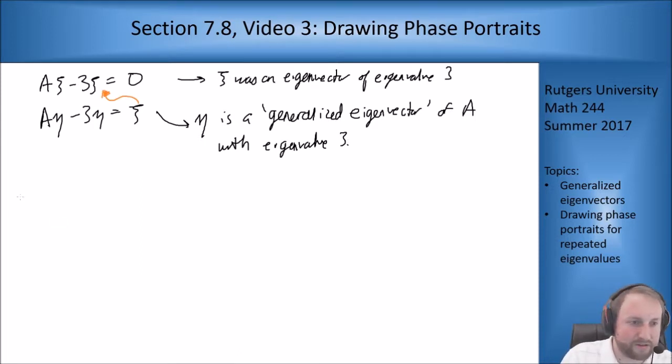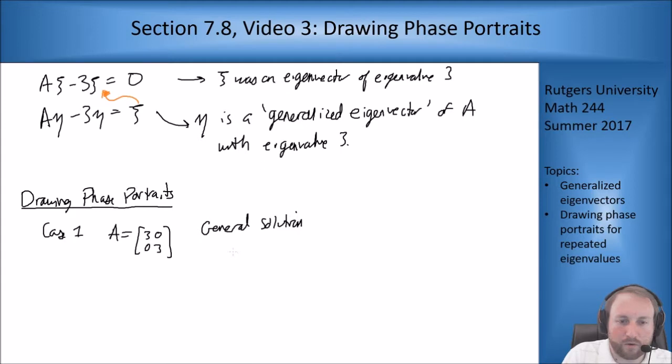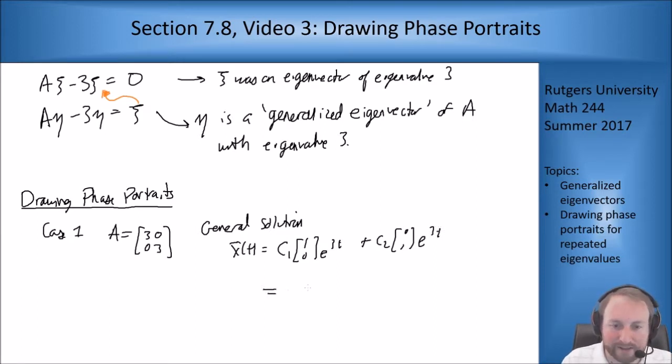Alright so phase portraits. I'm just going to use for these the two examples we did in the last video where we had the case with enough eigenvectors and the case without enough eigenvectors. Case one, A is the matrix [3 0; 0 3], where we had enough eigenvectors. Our general solution was x(t) = c₁[1;0]e³ᵗ + c₂[0;1]e³ᵗ.